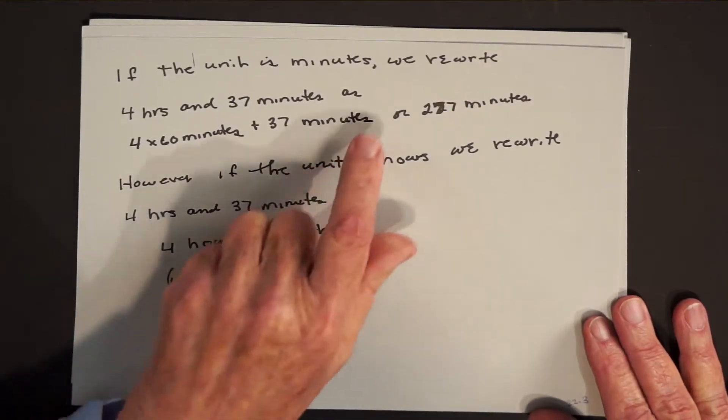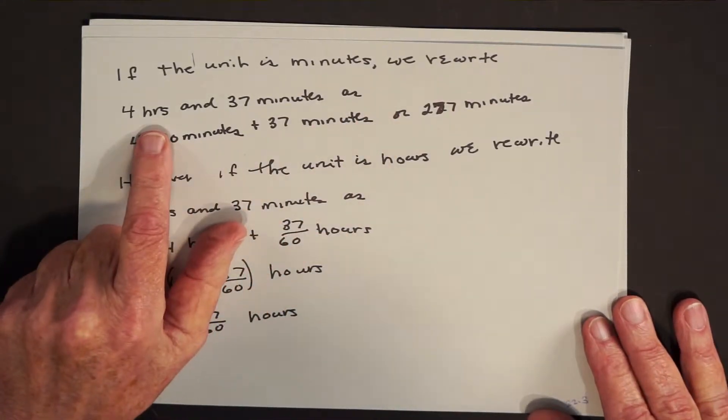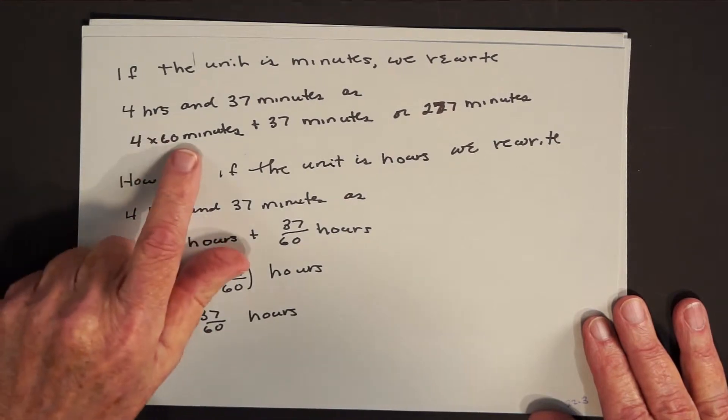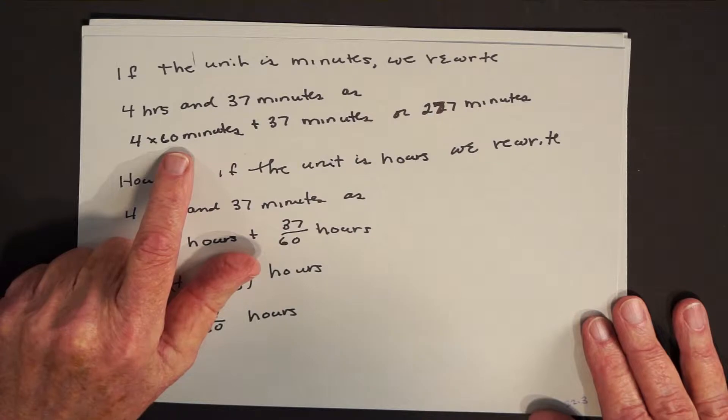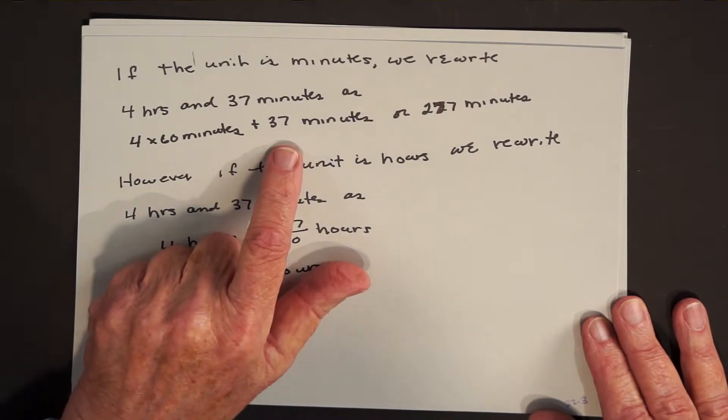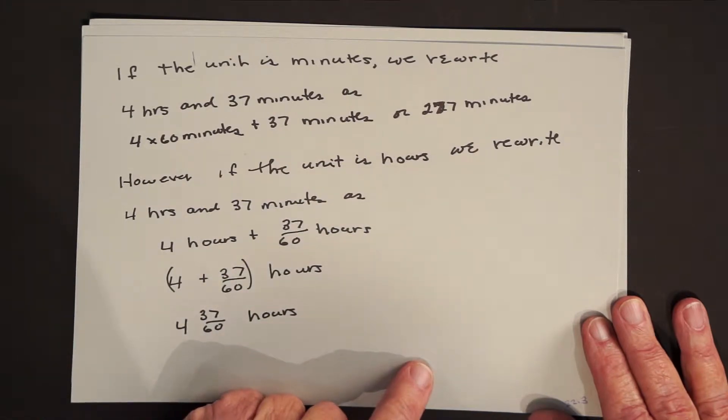So if the unit is minutes, we rewrite 4 hours and 37 minutes. Well, there's 60 minutes in an hour, so 4 hours would be 4 times 60 minutes, which is 240 minutes, plus 37 more minutes, that's 277 minutes.